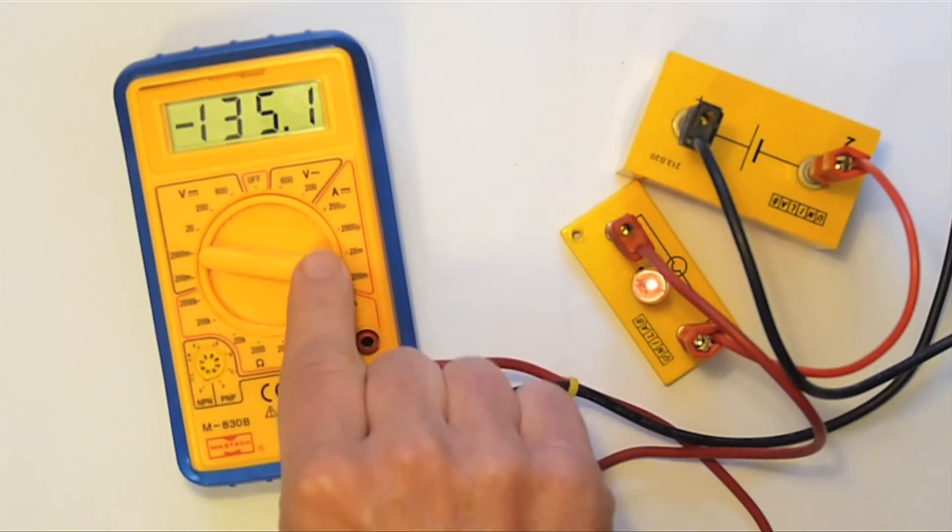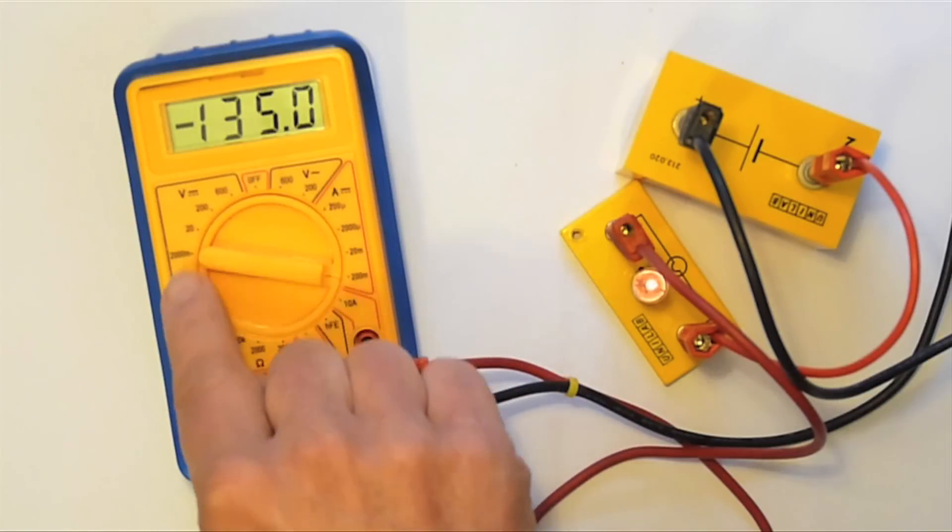If the milliamp ranges do not work at all, I just get a zero, then someone has blown the fuse. It needs to be replaced. However, the meter will still work as a voltmeter.